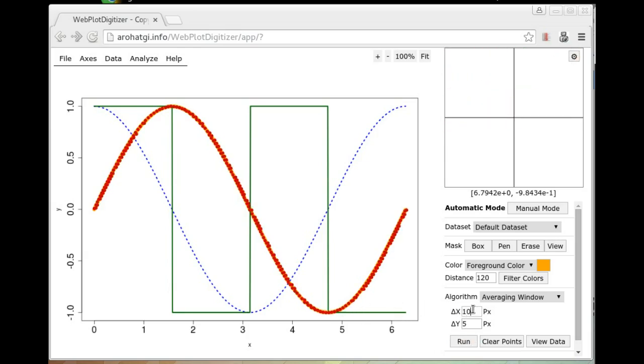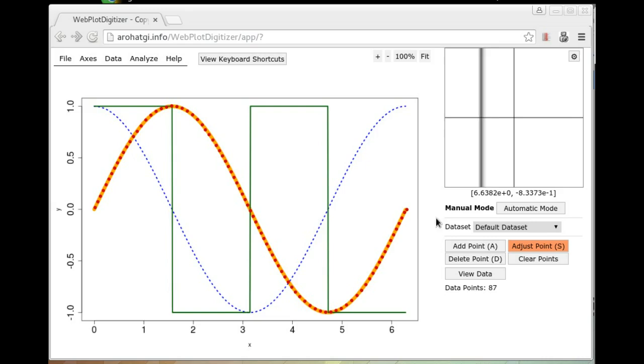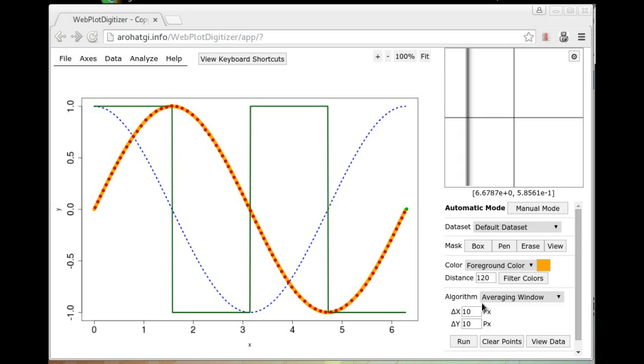For thicker plots, you usually want to increase this number. And for thin plots, you might want to decrease the two numbers here. You can also always go back to the manual mode and make fine adjustments to specific points if they don't look quite right. And you can come back to the automatic mode whenever you want.